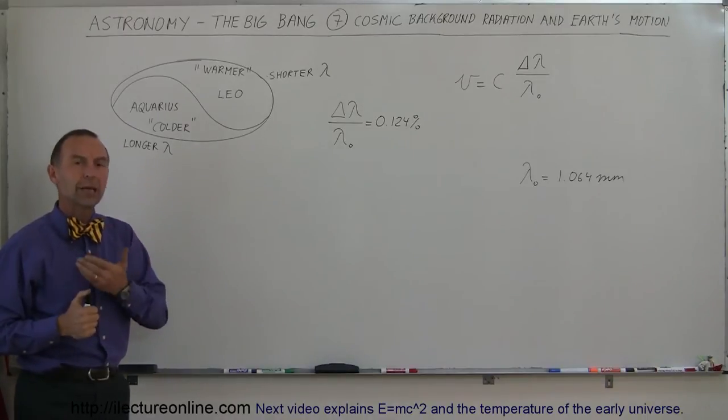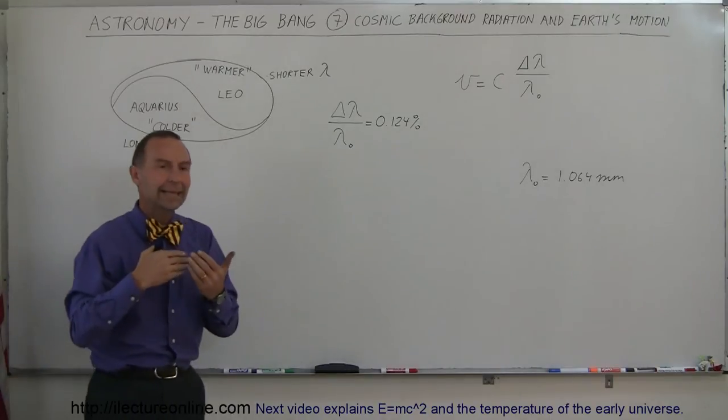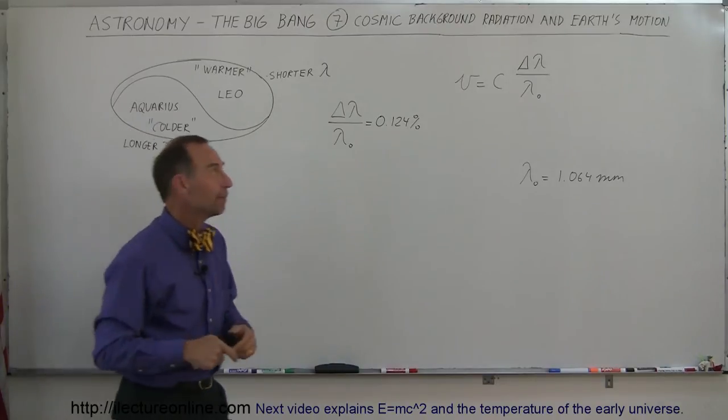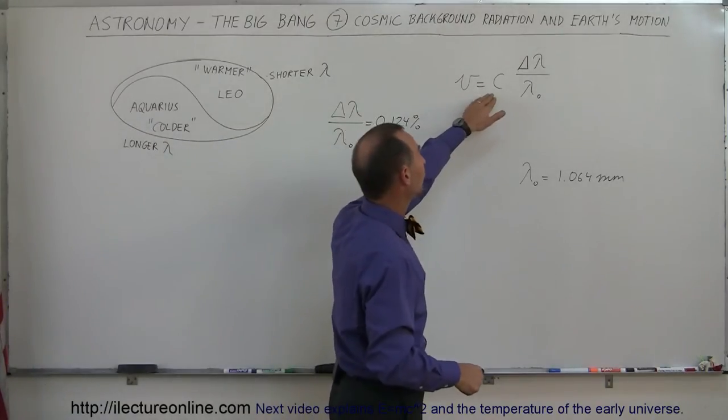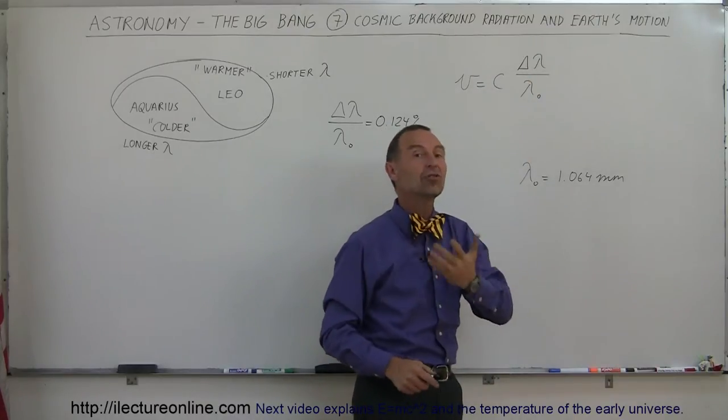Now we knew from looking at redshift and blueshift of light that anything that shifted from its normal frequency is associated with a velocity, and the equation here is equal to c times the ratio of the original wavelength and the change of the wavelength.